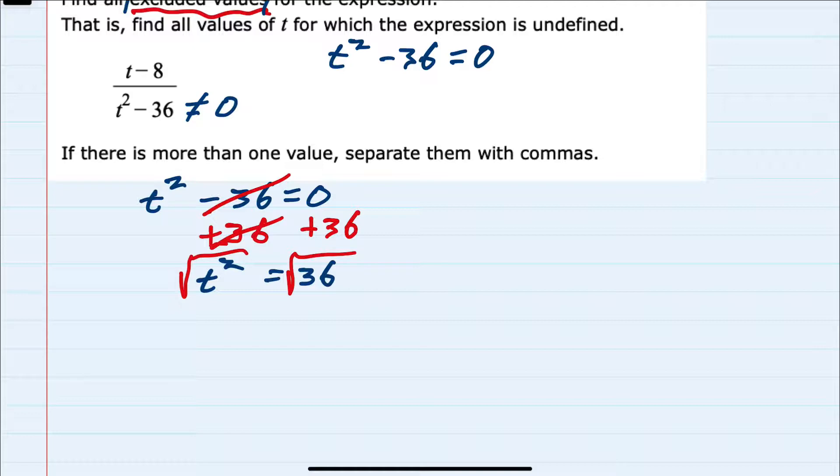The important thing to consider is that when you take the square root of a square, you get plus or minus t on the left hand side equals the square root of 36 is 6.